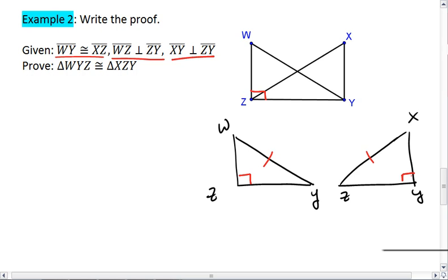Whenever you see right triangles, it should be a sign that you are going to have to use HL. Note that we have three ways to prove congruent triangles: side-side-side, side-angle-side, and HL. So we are probably going to use HL here.